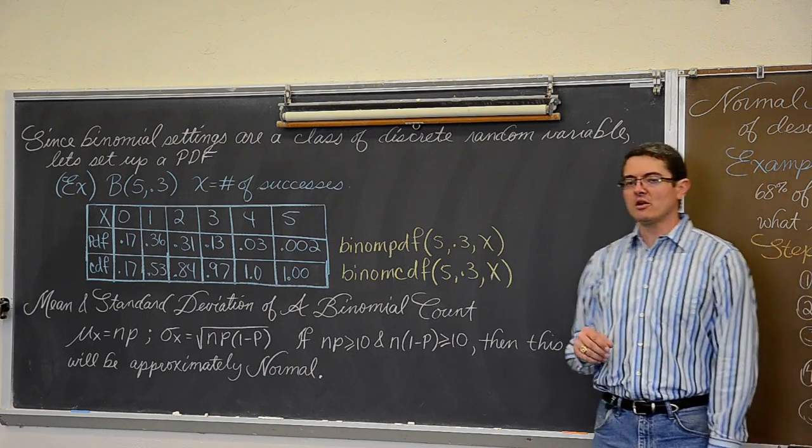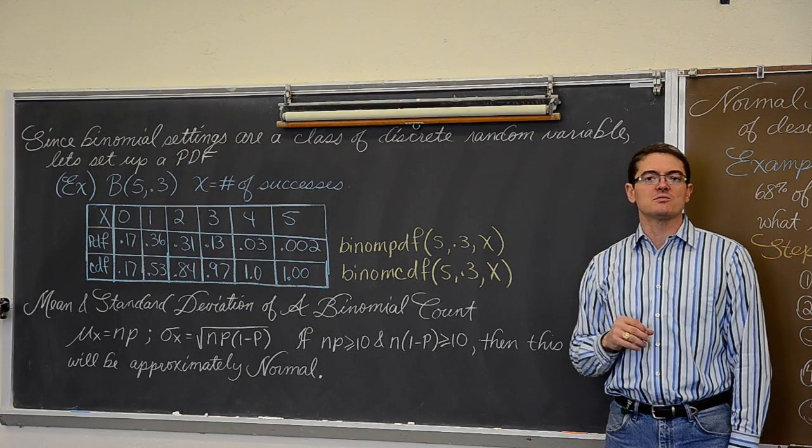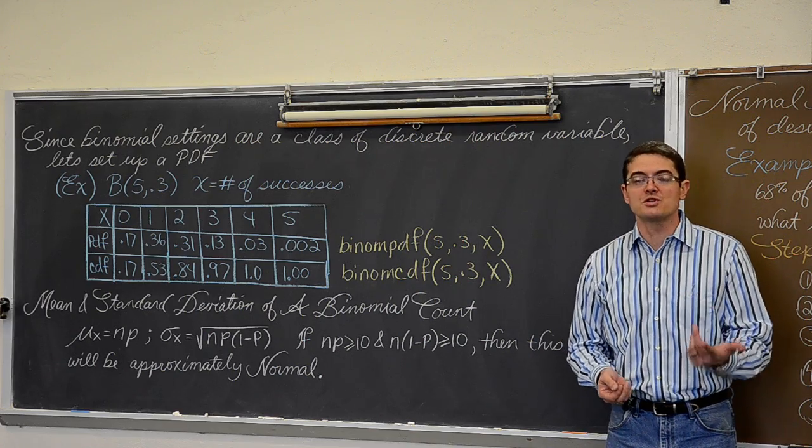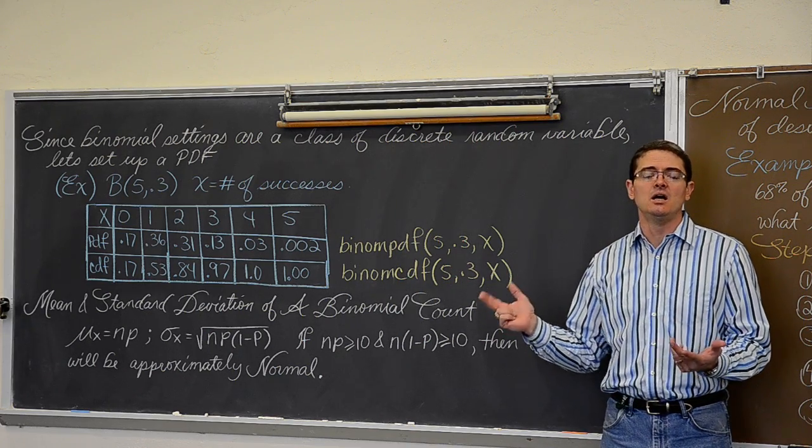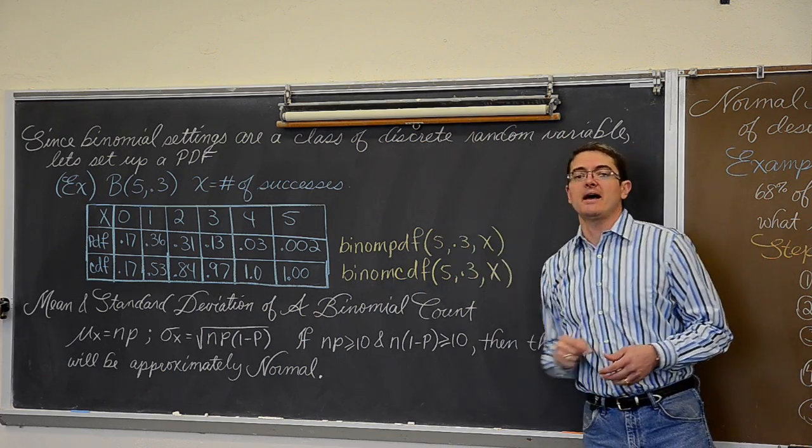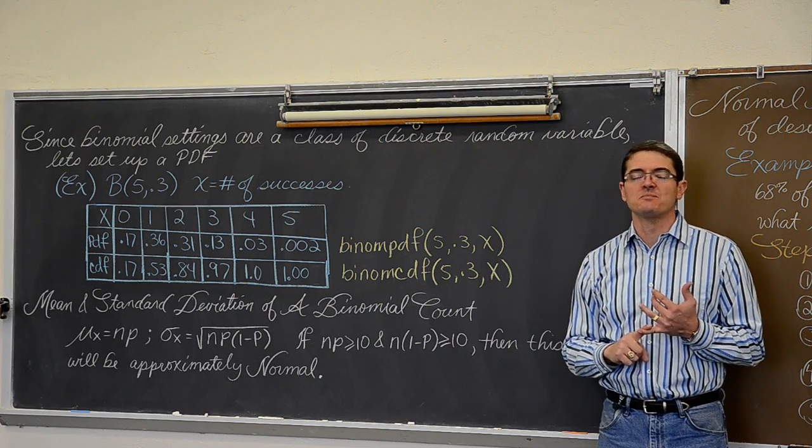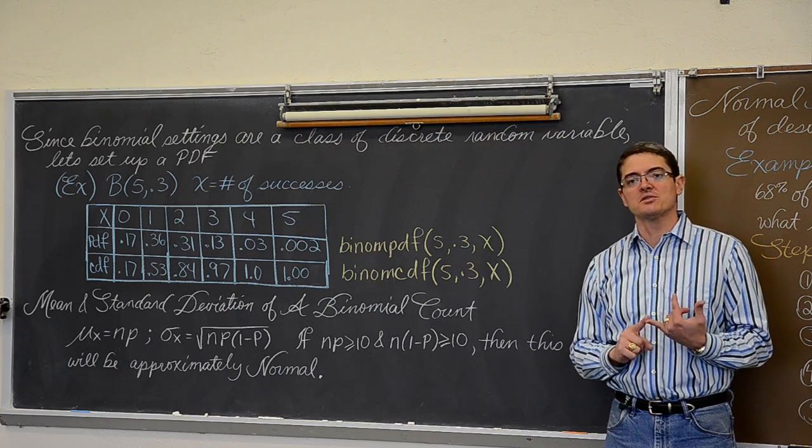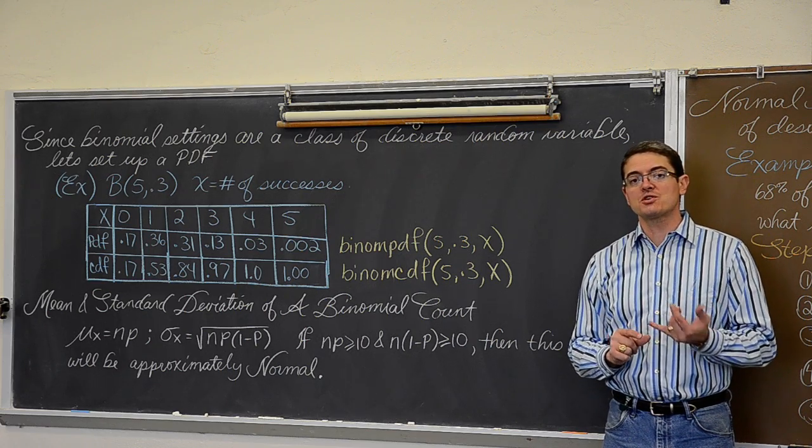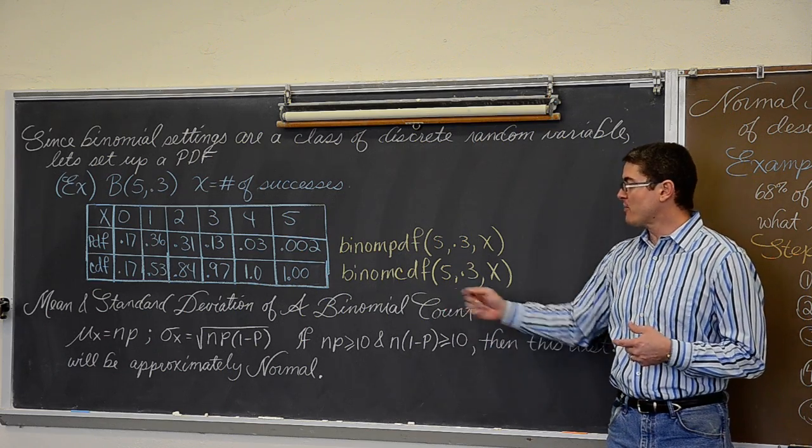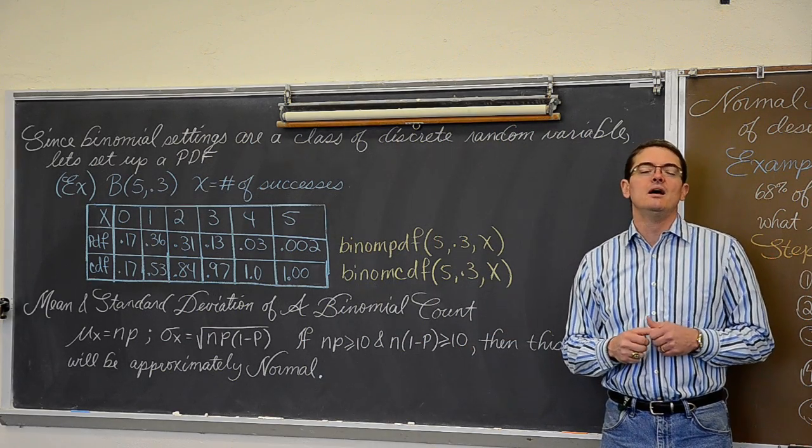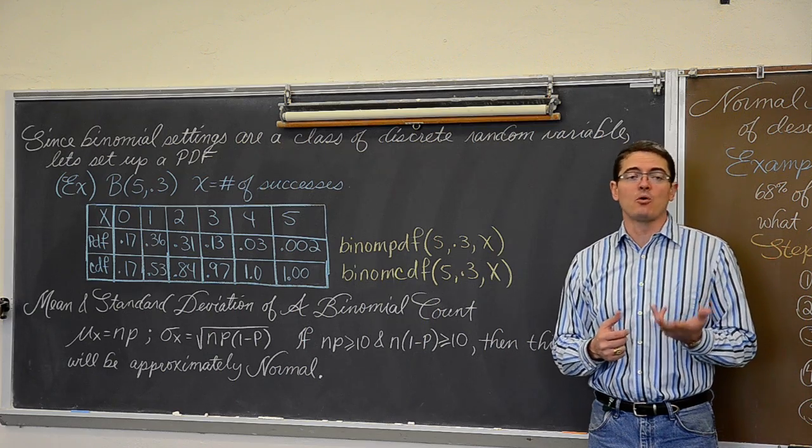Also our graphic calculators can only work with binomial distributions when they are in terms of a count. Later on we are going to learn about how to deal with binomial proportions, which is exactly the same setting, only x is going to be defined as percentage of success and not number of success. Since our calculator cannot work with binomial settings in terms of proportions, this idea of normal approximation, which actually is not written on the board yet, but it will be on the next screen, is pretty important.